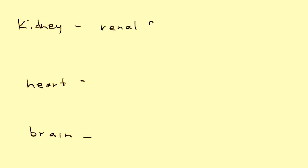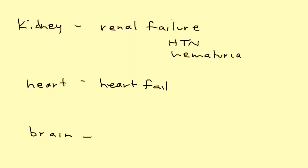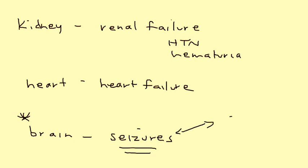There are a few other organs to discuss: kidney, heart, and brain. Kidney involvement will lead to renal failure and can also lead to high blood pressure and sometimes hematuria. Tumors in the heart can lead to heart failure. Importantly, seizures are a big part of the presentation of tuberous sclerosis, especially on licensing exams. Typically, you'll have a patient with seizures who, upon physical exam, will also have some of the characteristic skin findings — and that will guide you to this diagnosis.